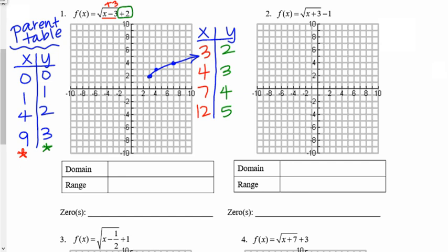Let's look at domain and range. The domain always has to do with our x values, and range has to do with our y values. What x value am I starting at with my first point? The x value is positive 3, and I have every x value greater than that, so my domain is x ≥ 3. My range: I'm starting at positive 2 and getting bigger, so y ≥ 2. For zeros — is my graph crossing the x-axis anywhere? No. I have no zeros.